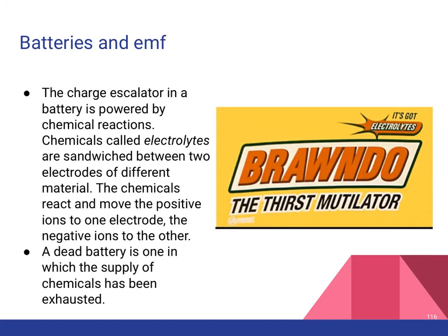The way batteries work is through a chemical reaction. Inside the batteries are electrolytes between electrodes. The electrolytes react with the electrodes and the chemicals make positive ions, which gives the battery its positive and negative terminals. Positive ions are sent to one electrode and negative ions to the other — that's why a battery has a positive and negative side, and that's what allows the electrons to flow. A dead battery just means the chemicals have been exhausted.